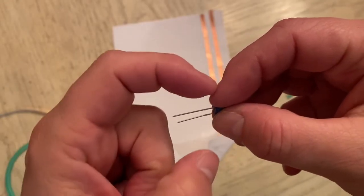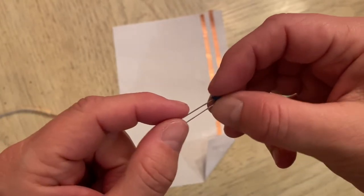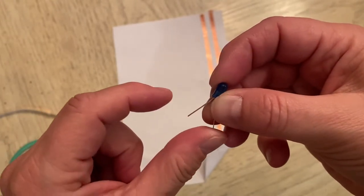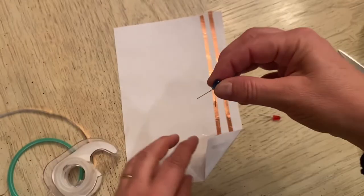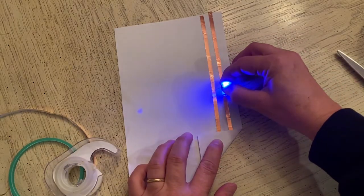The longer wire on the LED light is the positive side. So I'm just going to test the light and just set it down on the positive side. And sure enough, it lights up.